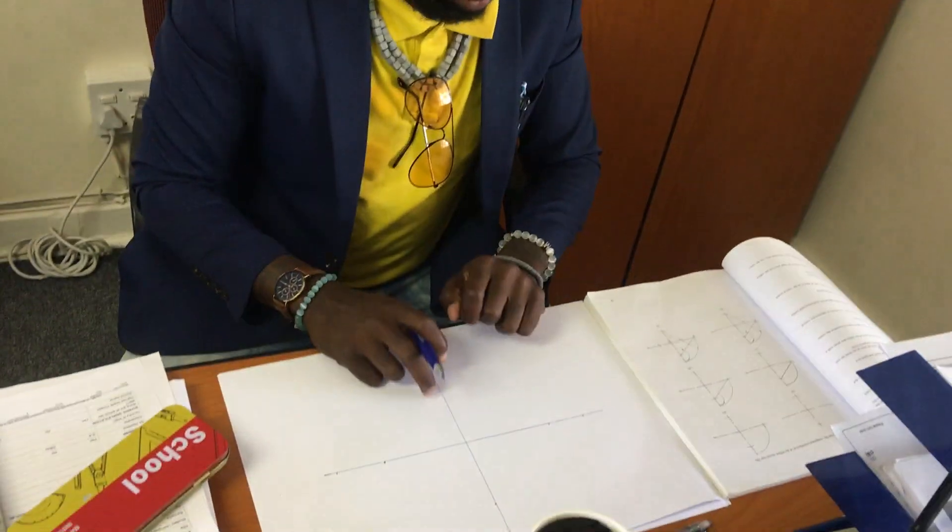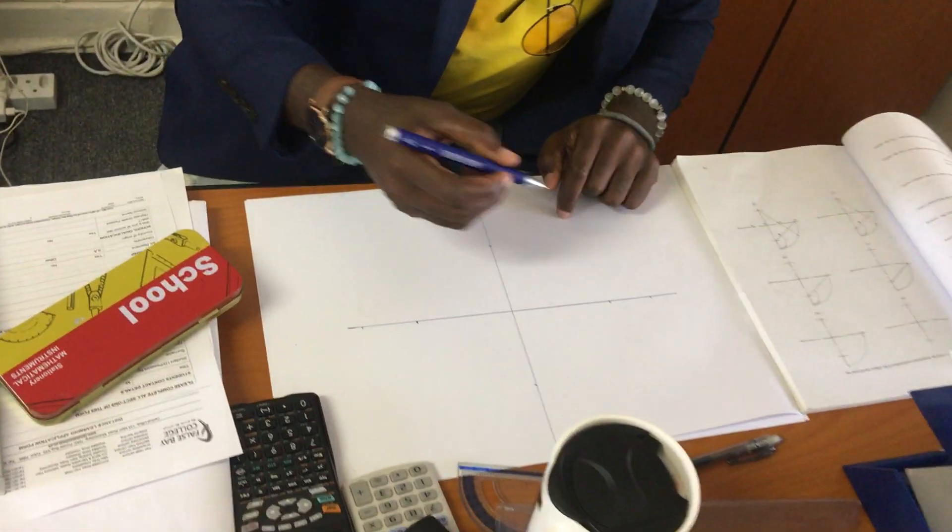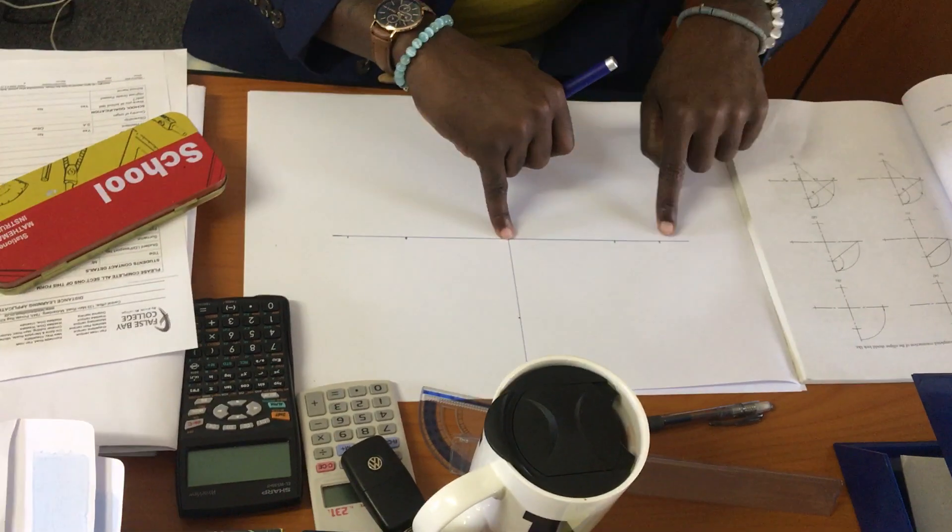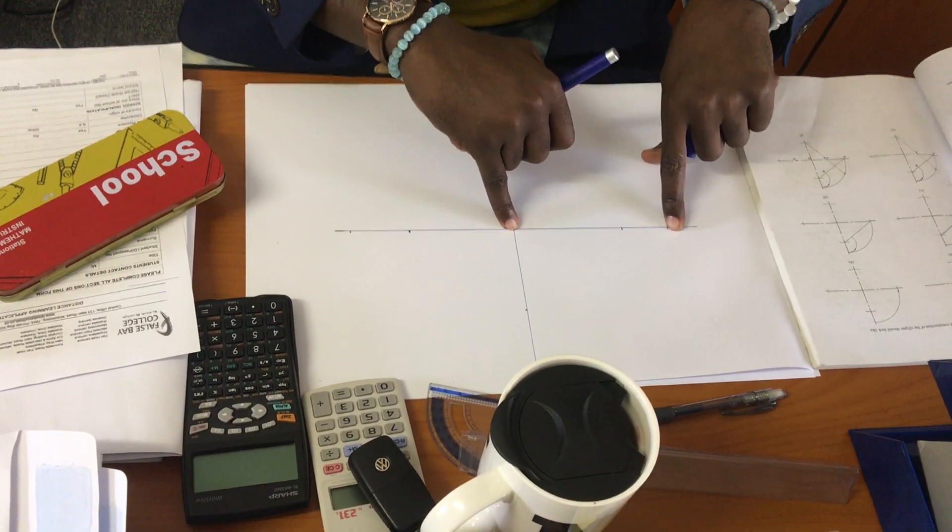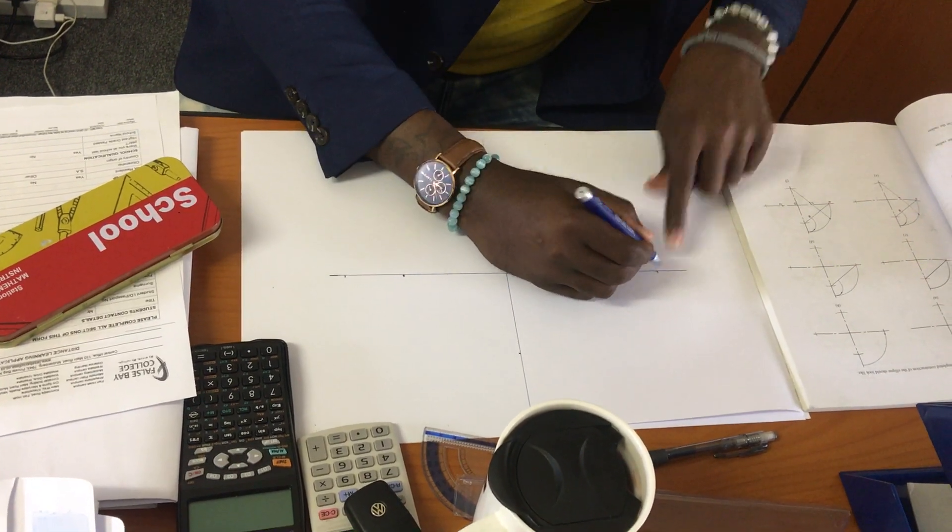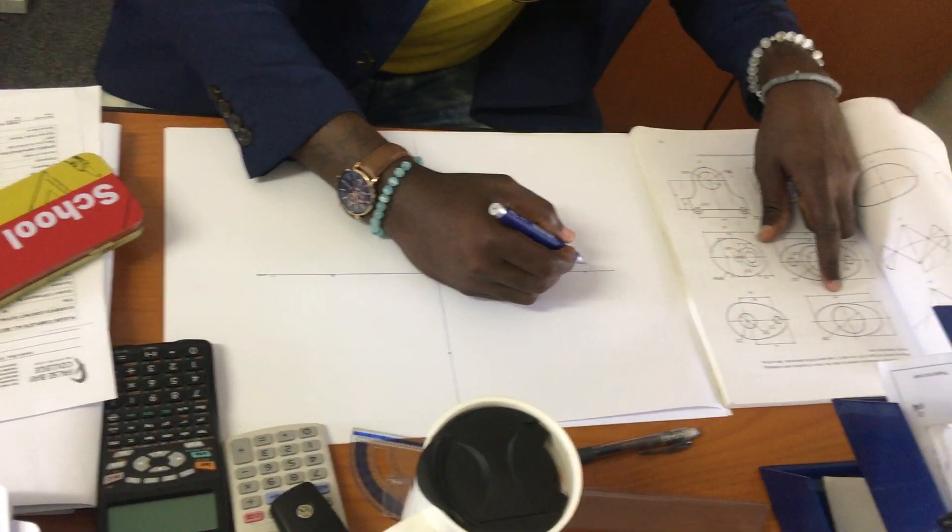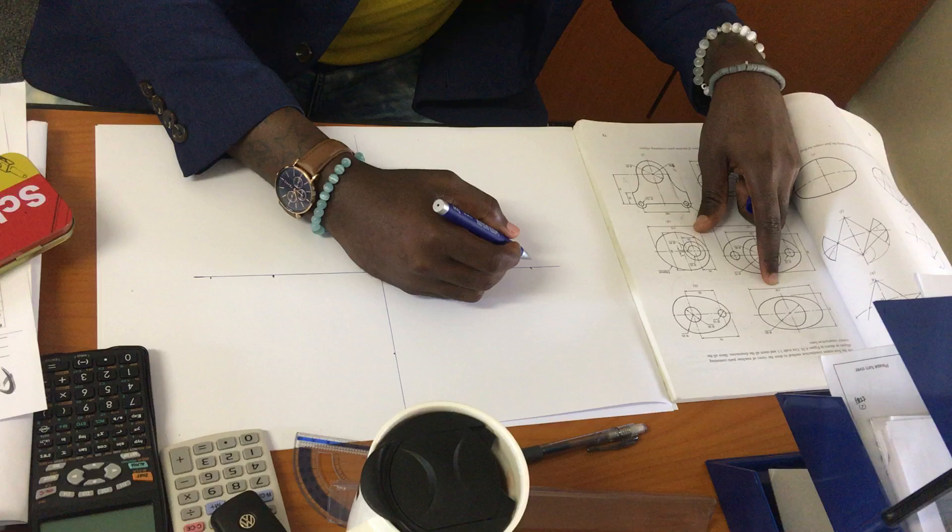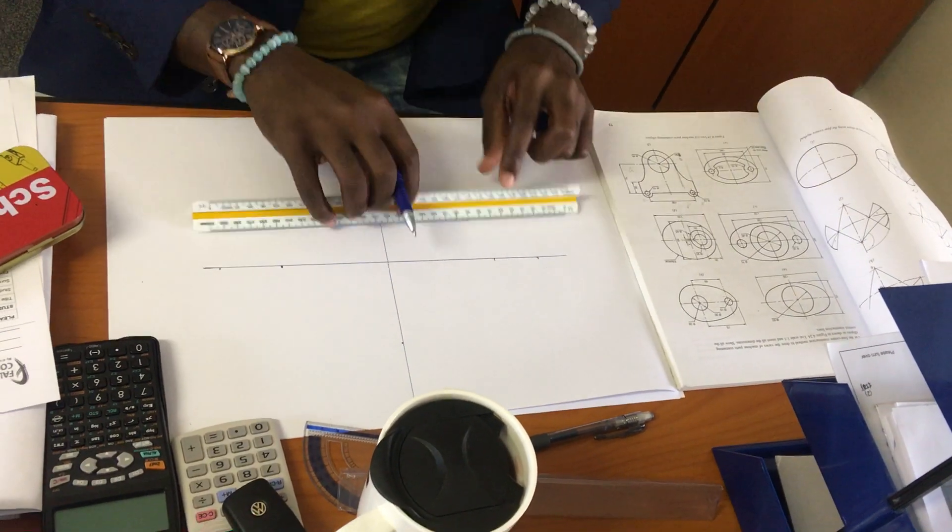You take your compass and you put it on the middle and you pinpoint the furthest point, which in our example is 130 divided by two.